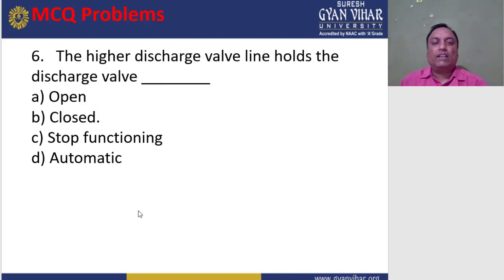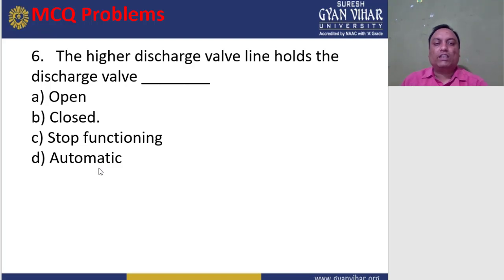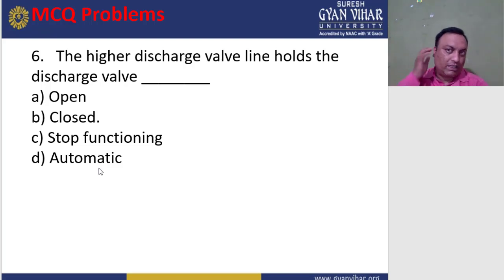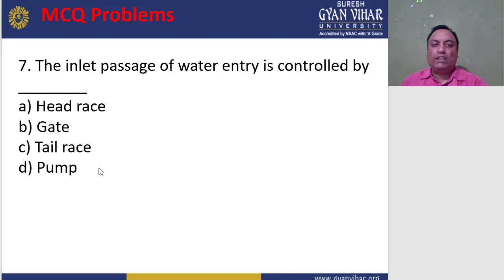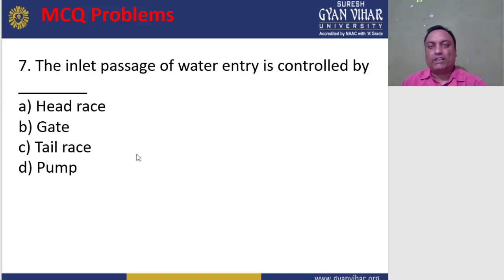Question 6: The higher discharge valve line holds the discharge valve in what position — open, closed, stop functioning, or automatic? The correct answer is b — closed. Question 7: The pressure line, the inlet passage of water entry, is controlled by — a) head race, b) gate, c) tail race, d) pump? The correct answer is b — gate.